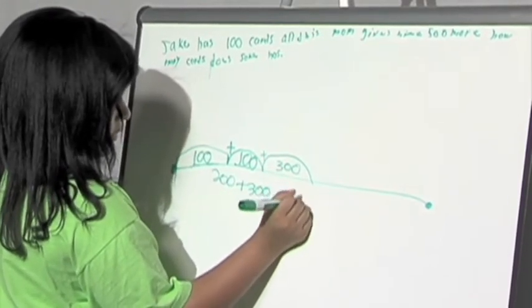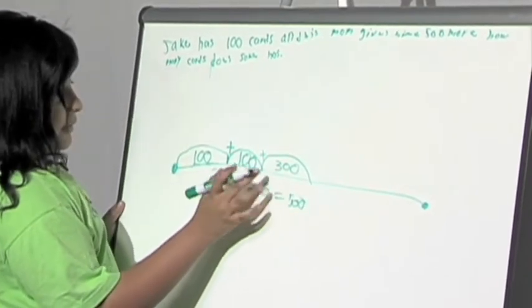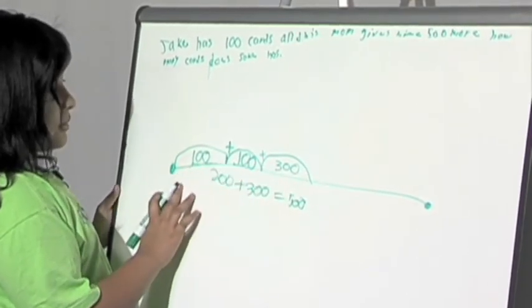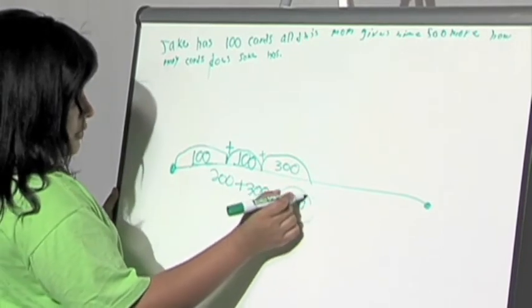Now, if I add 300 plus 100 plus 100, it's the same thing as 500.